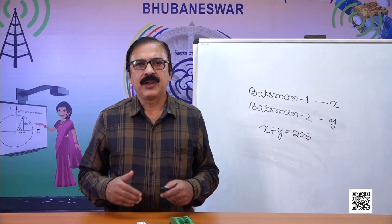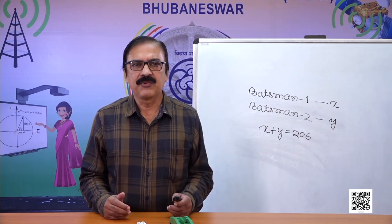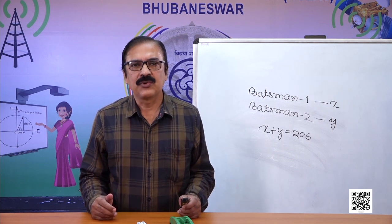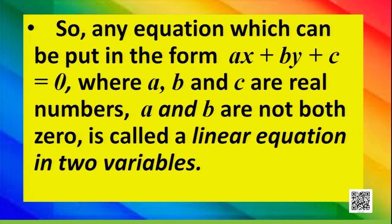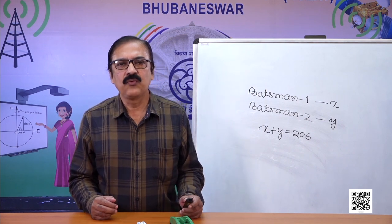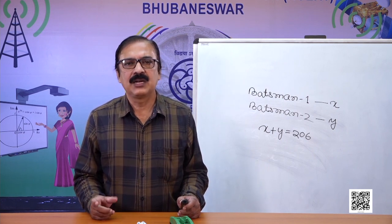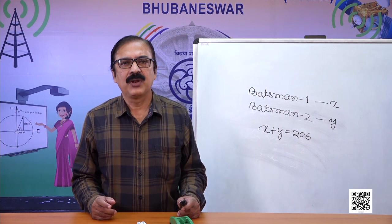Now let us generalize what a linear equation in two variables is. Any equation which can be put in the form ax plus by plus c equal to 0, where a, b, c are real numbers and a and b are not both zero, is called a linear equation in two variables. One of them may be zero, but not both. So here we have two variables and the general form is ax plus by plus c equal to 0.